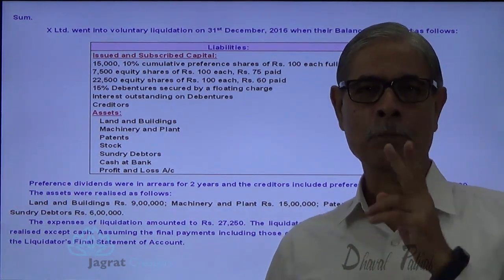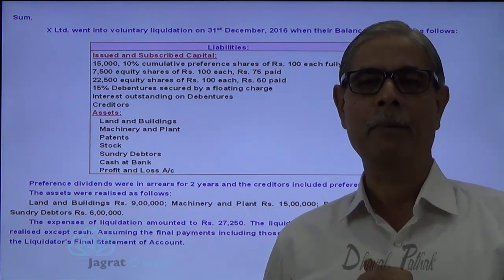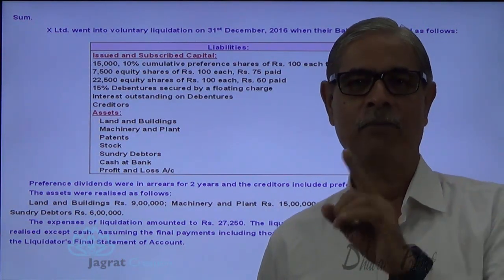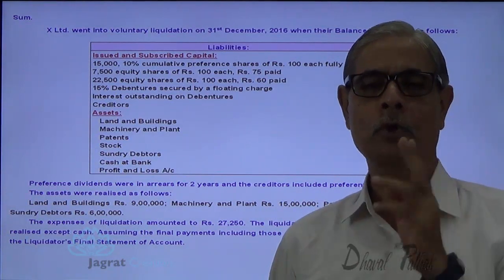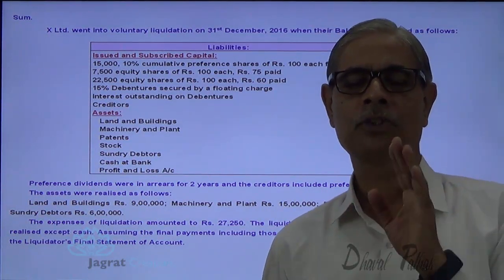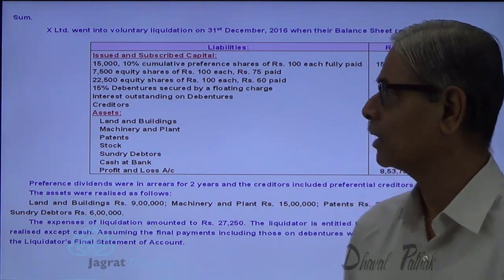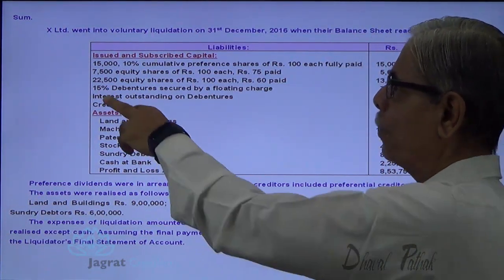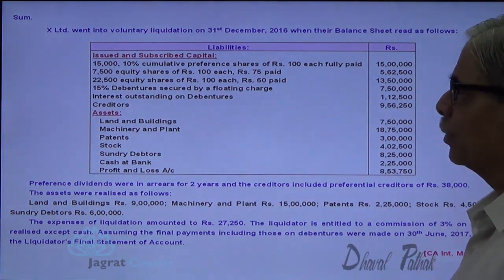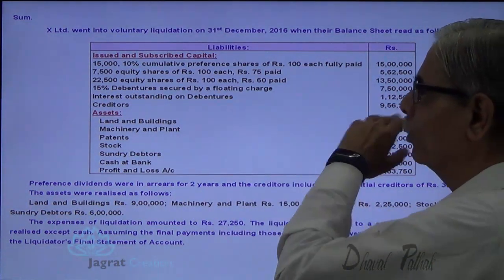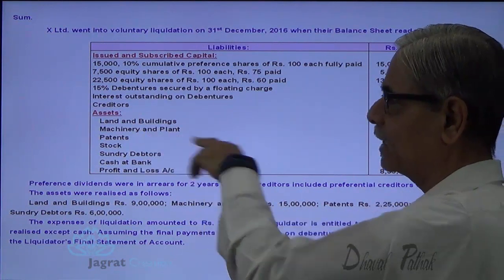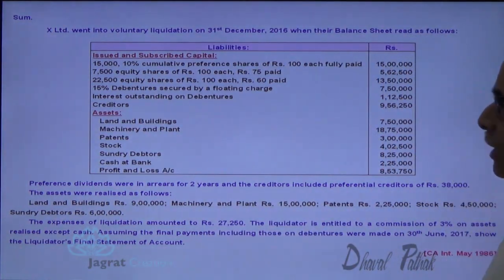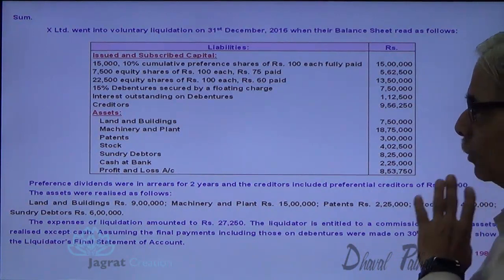Under such circumstances, when you prepare a memoranda cash account, instead of finding out the refund per rupee of capital, you can find out the refund per rupee of share — that's an important point. The liabilities include 15% debentures secured by a floating charge, interest outstanding on debentures, and creditors. Assets include land and building, plant and machinery, patent, stock, debtors, cash and bank balance, and profit and loss account.